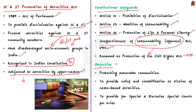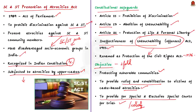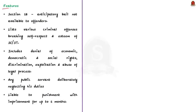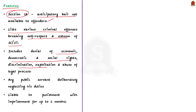The objective of the act is twofold: protecting the members of these vulnerable communities, and providing relief and rehabilitation to victims of caste-based atrocities. The act prevents commission of offenses against SC and ST members, provides special courts and exclusive special courts for trial of such offenses, and provides relief and rehabilitation to victims. An important feature is Section 18, which says that anticipatory bail is not available to offenders. Any public servant who deliberately neglects duties under this act is liable to punishment with imprisonment for up to six months.